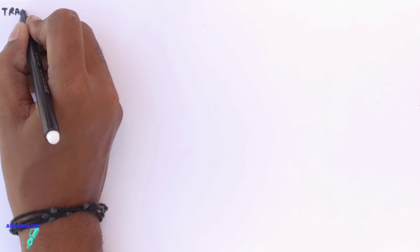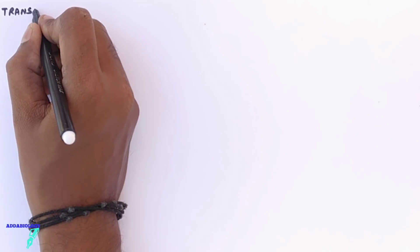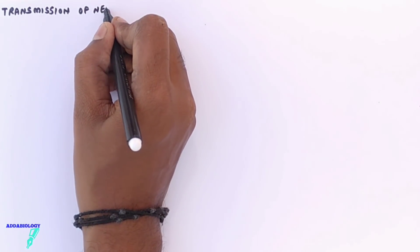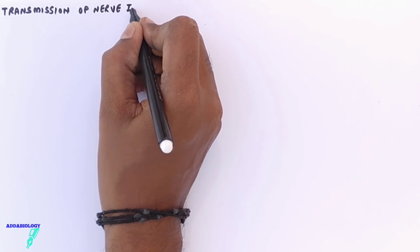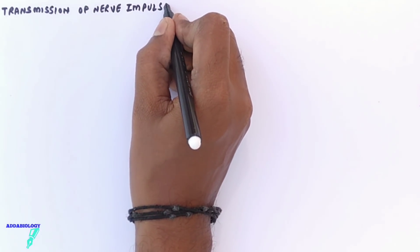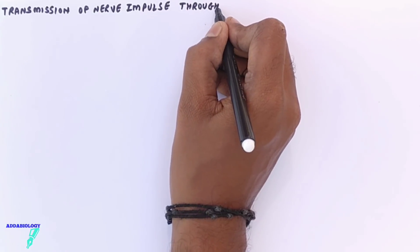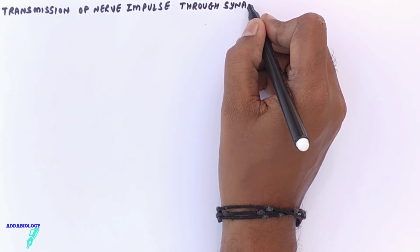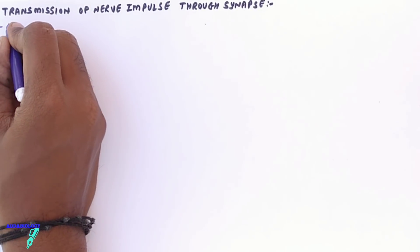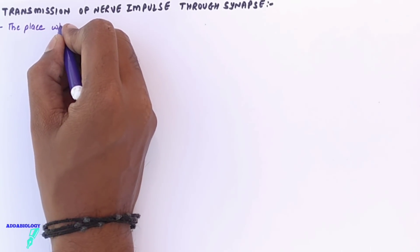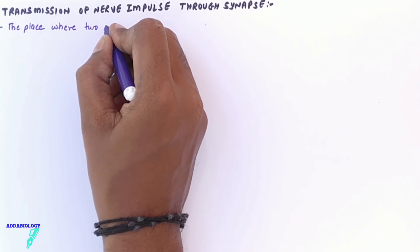In this video we are going to talk about transmission of nerve impulse through synapse. Nerve impulse and synapse are the two important words we need to understand first. Whenever we use the word synapse, it simply means the place where two neurons meet is called a synapse.